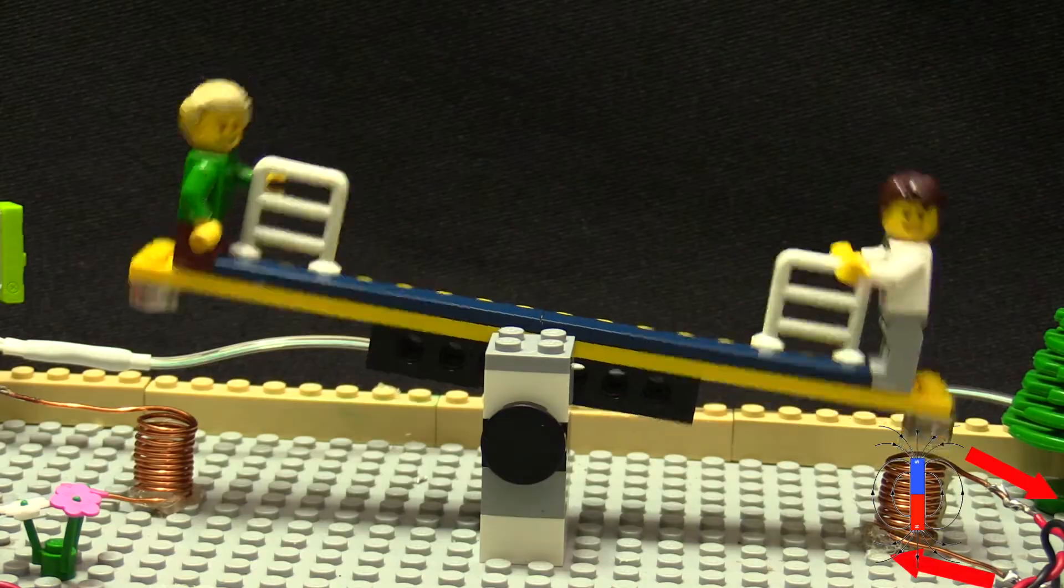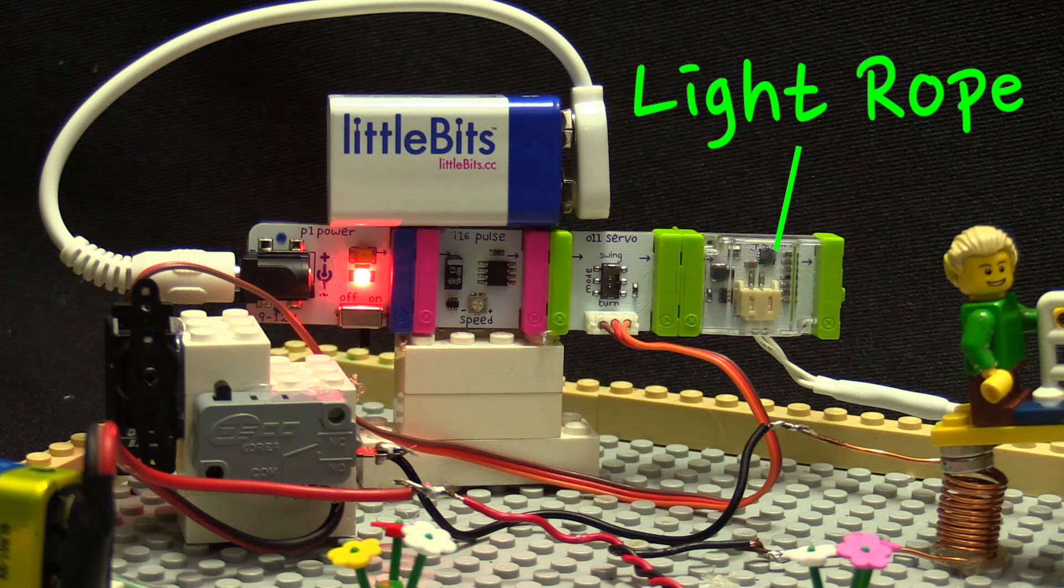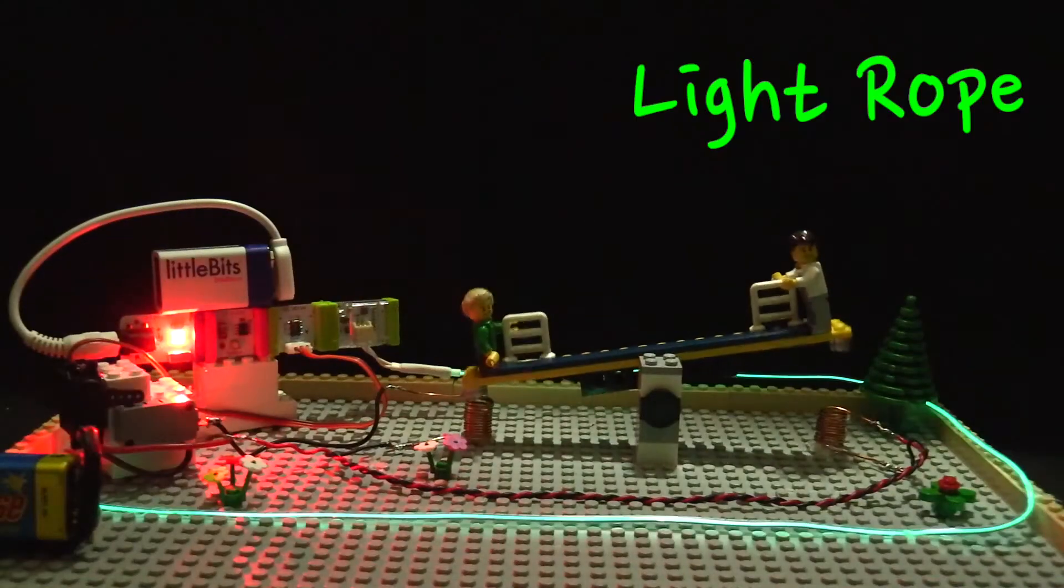I like seesaws. There's another module on the littleBits as well, and that's connected to this green light rope. Check it out in the dark. How cool is this?